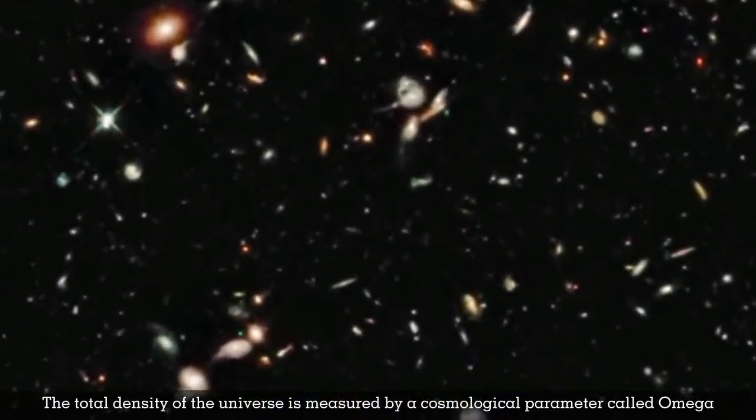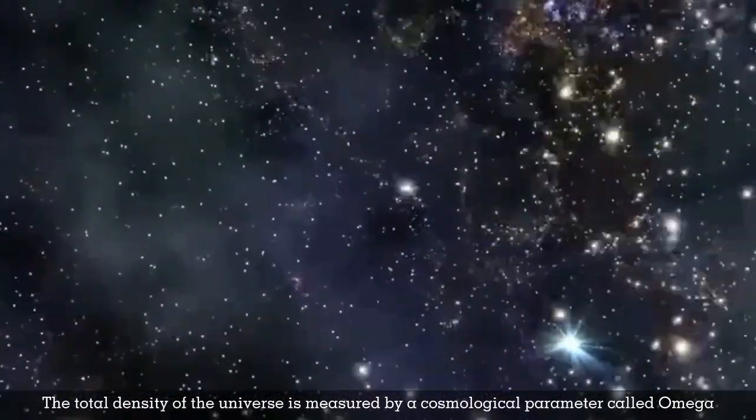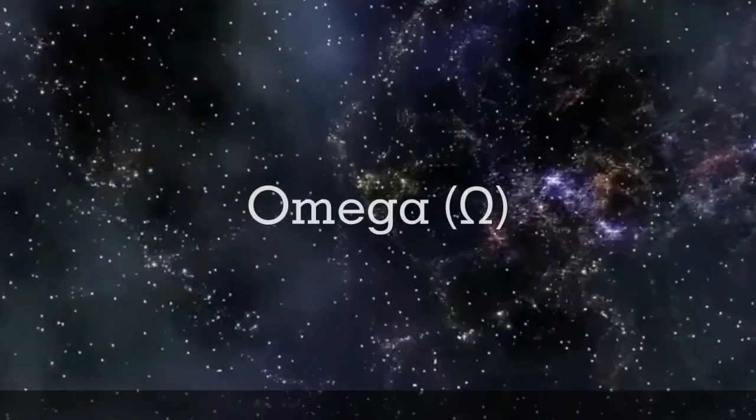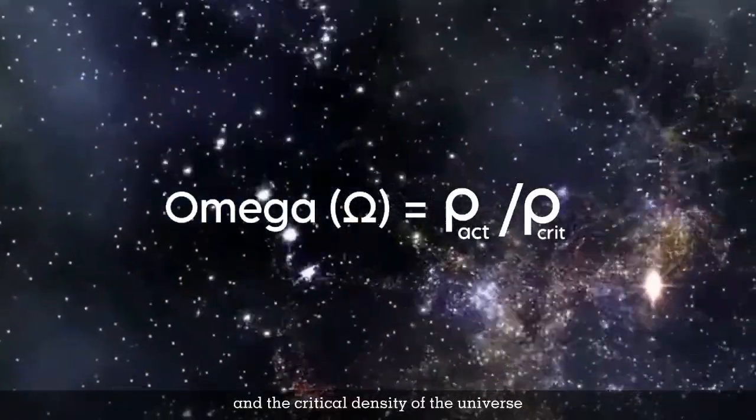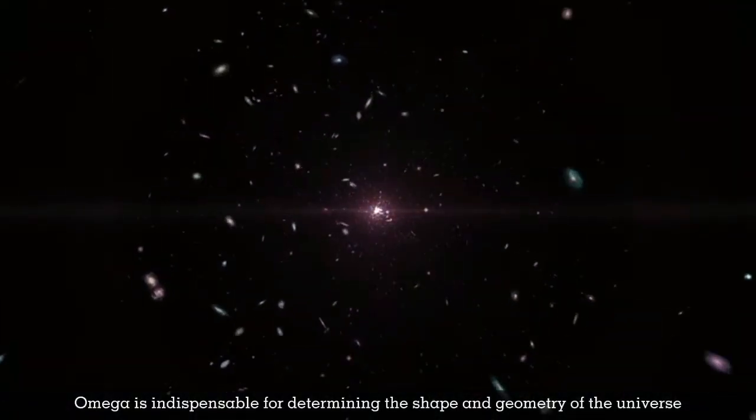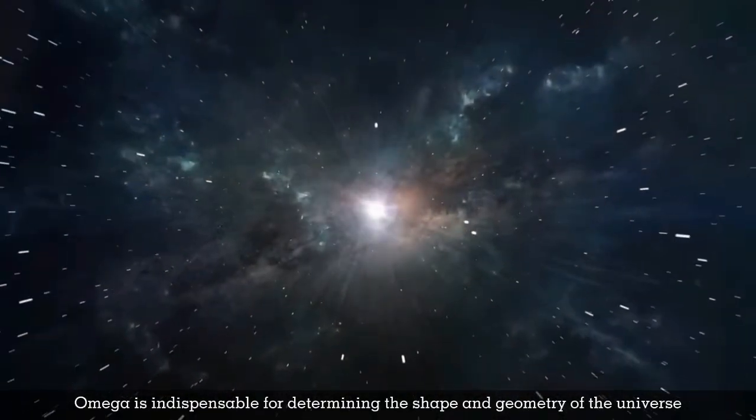The total density of the universe is measured by a cosmological parameter called omega. Omega is the ratio between the actual density of the universe and the critical density of the universe. Omega is indispensable for determining the shape and geometry of the universe.